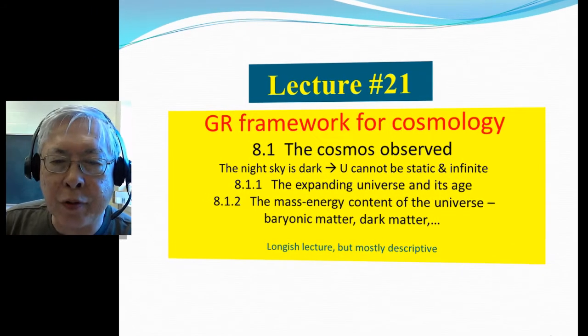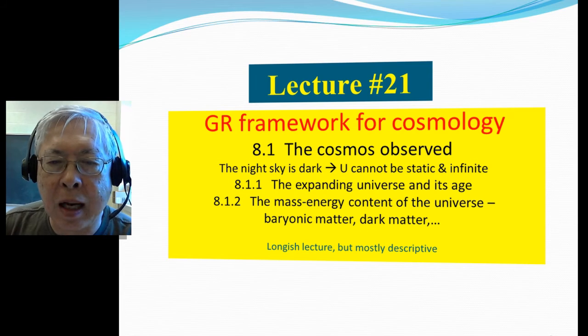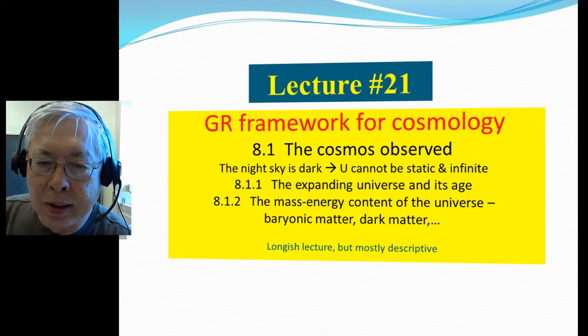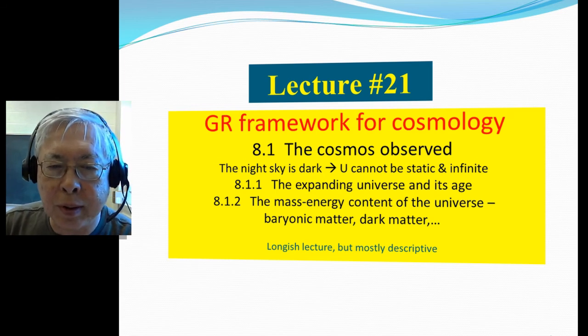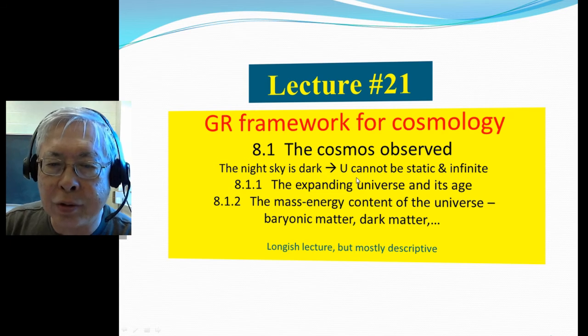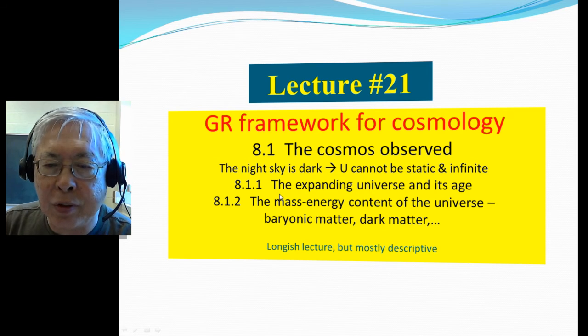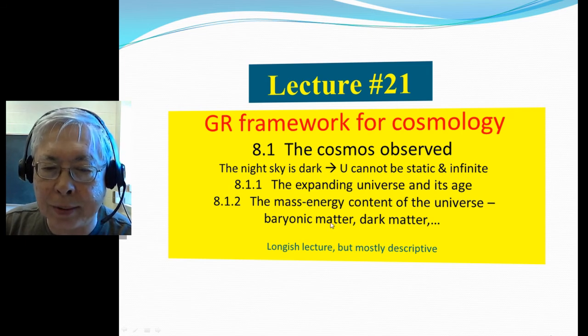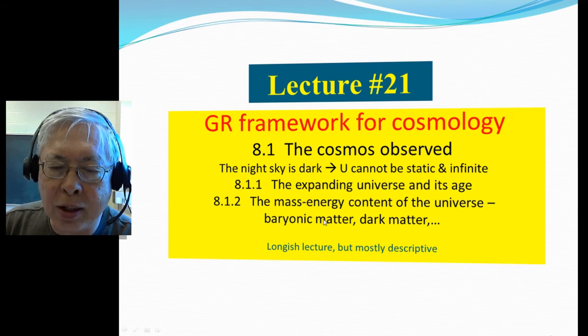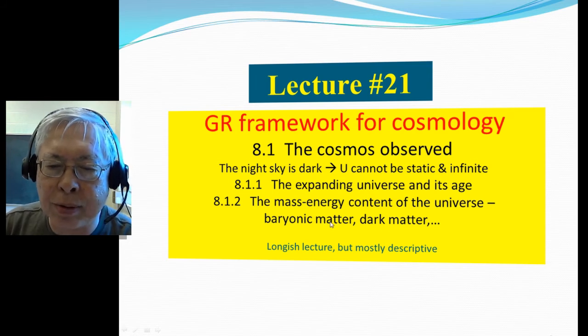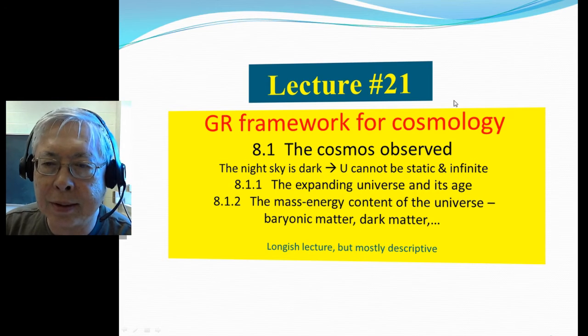And so the first section we talk about the observation aspect of cosmology, the overall picture, and then we're going to talk about the fact that the sky is dark, so the universe cannot be static, infinite. Then we're going to talk about the expanding universe and its age and its mass energy content, so-called baryonic matter and dark matter. Okay, this is going to be a longish lecture, but mostly descriptive, so the length shouldn't be too demanding.